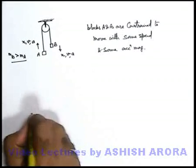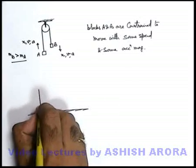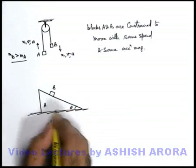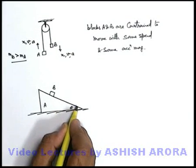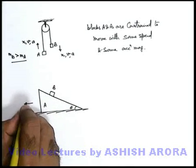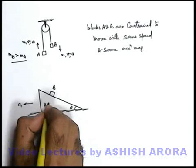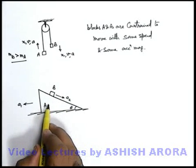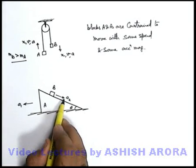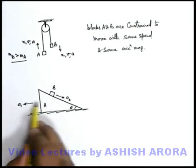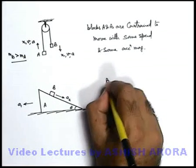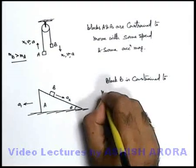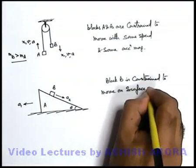Similarly, on a horizontal plane, say there is a triangular block A over which there is another block B. Block B is constrained to move along the inclined surface of this triangular wedge block. In this situation, if A moves toward the left with an acceleration a₁, and B moves on the surface of A with an acceleration a₂, then block B is constrained to move on the surface of A.